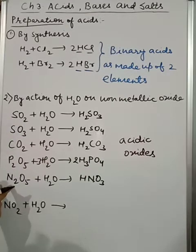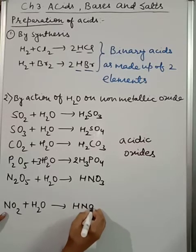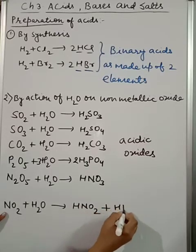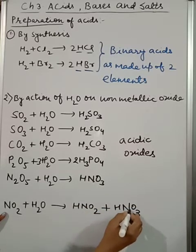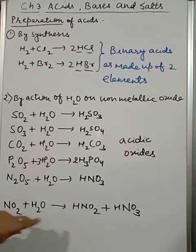Here I am taking N2O5, but if you will take nitrogen dioxide NO2, then you will get a combination of acids: nitrous plus nitric. That's why another name of this NO2 is also mixed or double oxide, because it's going to give two acids.